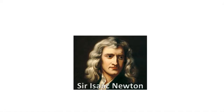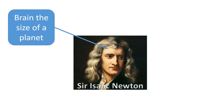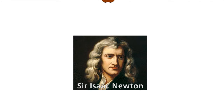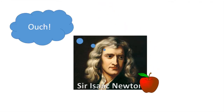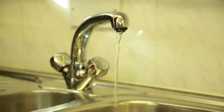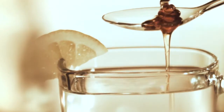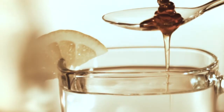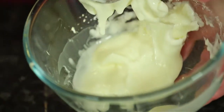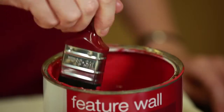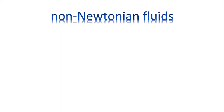Sir Isaac Newton, physicist, mathematician and all-round genius, most famous for discovering gravity, also observed that most liquids had a constant viscosity. Water was always runny and honey was always less runny. But there are also some fluids which are less runny or more runny when you stir them. These are called non-Newtonian fluids.